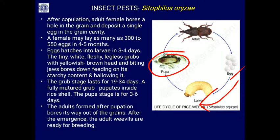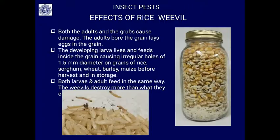The adults formed after pupation bore their way out of the grain and move to other grains, multiplying in large numbers if the grains are left unchecked. After emergence, adult weevils are ready for breeding again immediately, completing the life cycle of Sitophilus oryzae.